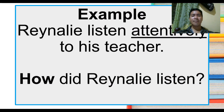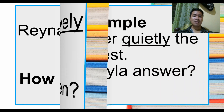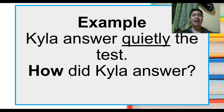Here is a question: how did Kaila answer? Example sentence — Kaila answered the test quietly. How did Kaila answer? Quietly.